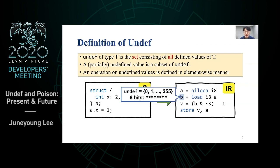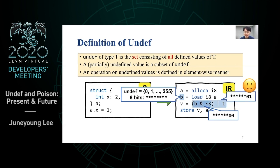Let's rerun the bit field example using this definition. b is undef — a set of all possible 8-bit integers, with stars representing uninitialized bits. The AND operation performs elementwise operation, returning a partially undefined value: a set of 8-bit integers with the two lowest bits set to 0. Then the OR operation returns a set of integers with the lowest bits set to 01. There was no undefined behavior, and we could successfully preserve the undefinedness of the remaining 6 bits.